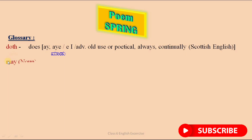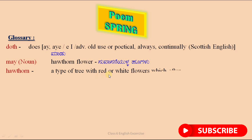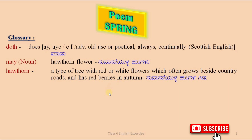Next one — May. May is a noun. May is the Hawthorn flower. Hawthorn is a type of tree with red or white flowers which often grows beside country roads and has red berries in autumn.